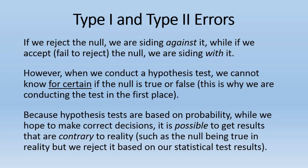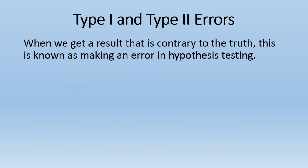Because hypothesis tests are based on probability, while we hope to make correct decisions, it is possible to get results that are contrary to reality, such as the null being true in reality but we reject it based on our statistical test results. When we get a result that is contrary to the truth, this is known as making an error in hypothesis testing.